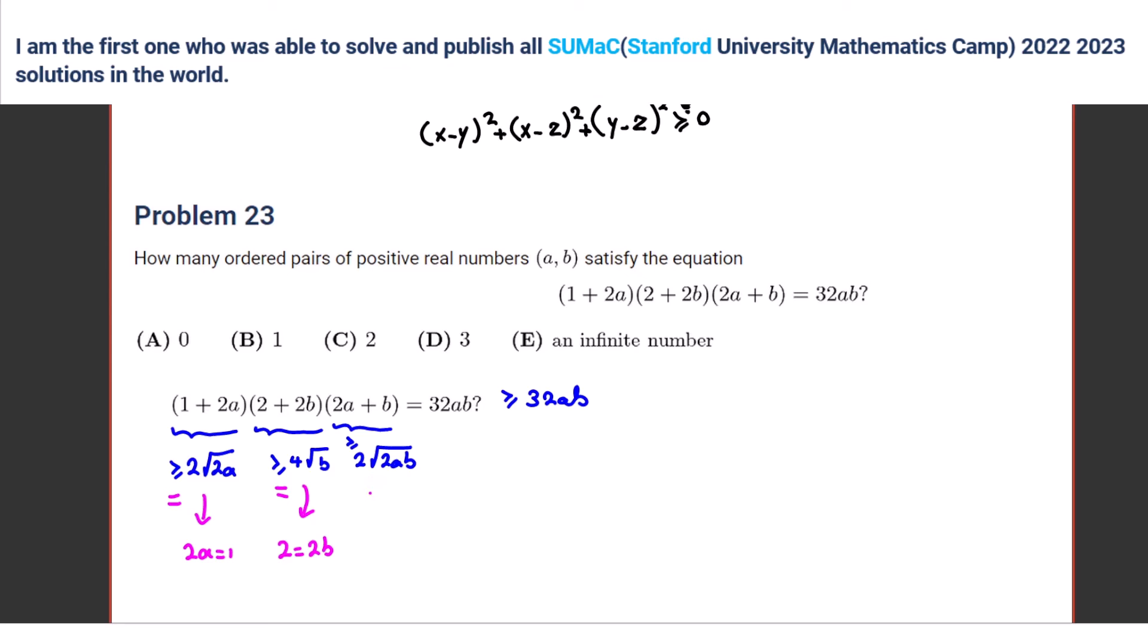And this one, when we have equality, 2a equals 3, so a is what? b is what? b is 1, a is 1/2. Exactly. And it wants what? It says how many ordered pairs, so one answer, right? Yeah, okay.